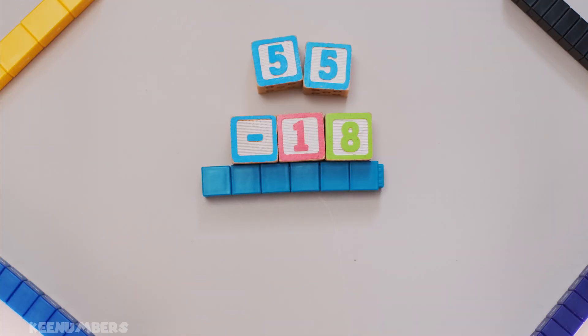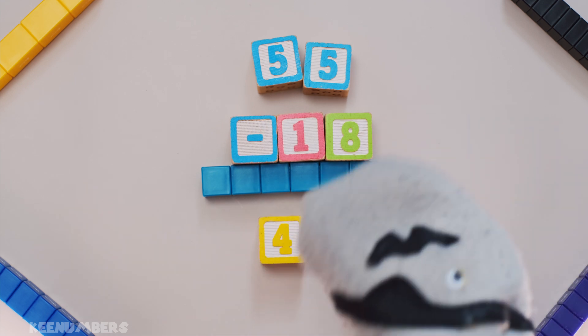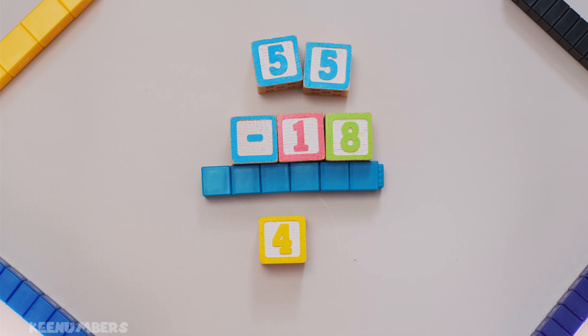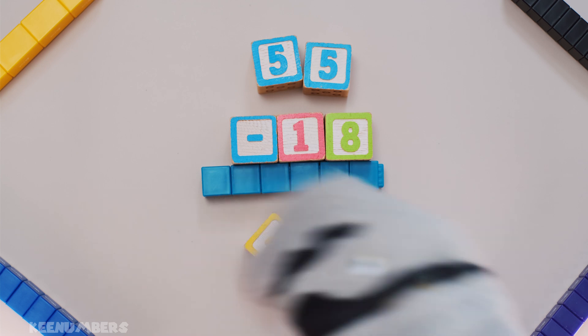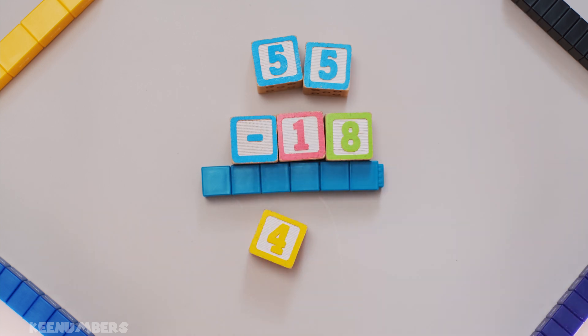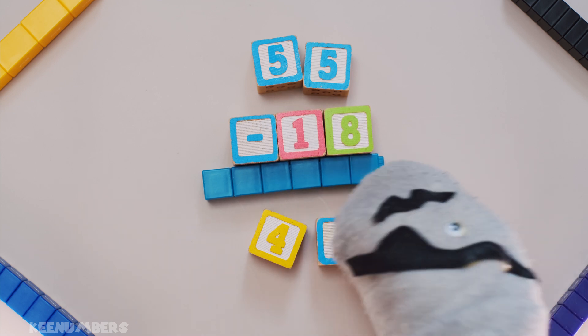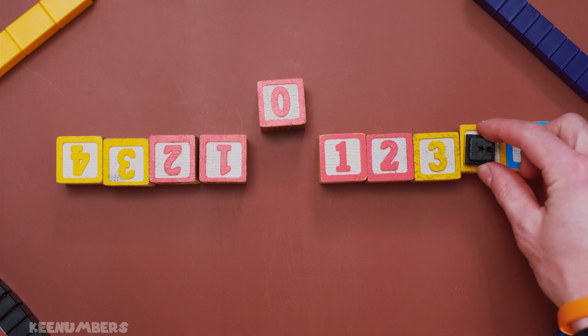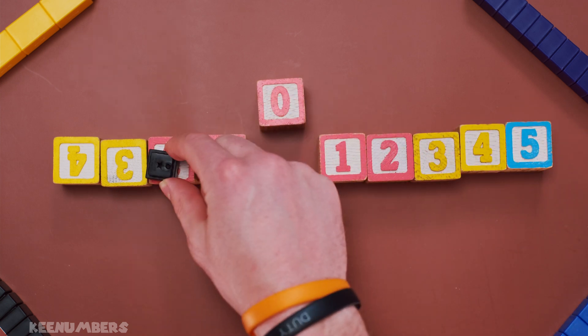55 minus 18. 5 tens minus 1 tens equals 4 tens. In other words, that's essentially 40. But what we have here is 5 ones minus 8 ones. 5 ones minus 8 ones. That's minus 3.